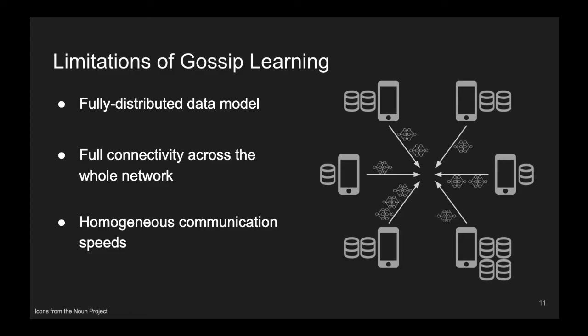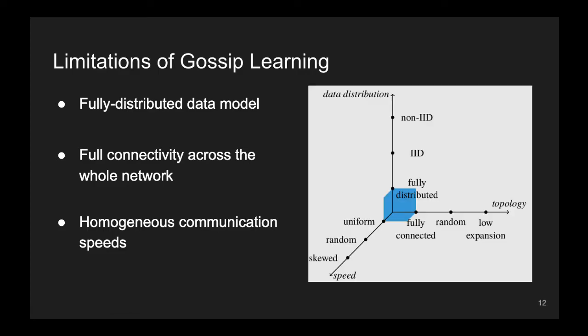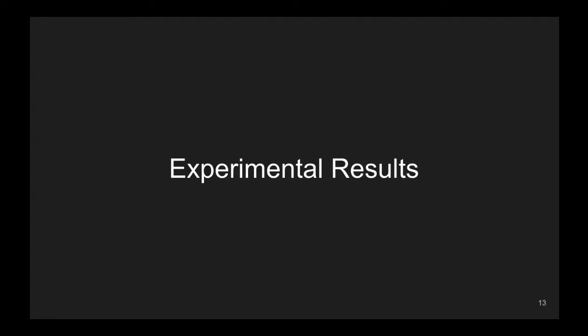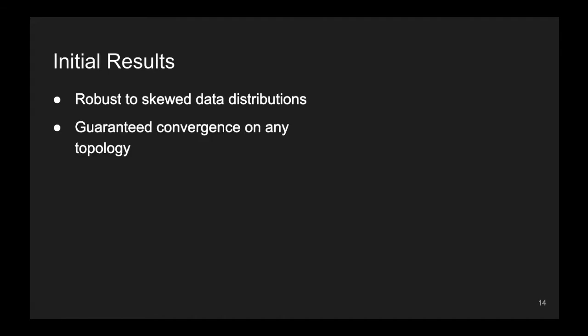Thus, our research has identified three orthogonal dimensions over which the protocol needs to be extended in order to be more widely applicable, namely the communication topology, the data distribution, and the communication speed. We then moved to simulate Gossip Learning in different scenarios on these axes. First, we noticed that Gossip Learning is very robust to uneven data distributions, and also that, as expected, it converges on any topology.